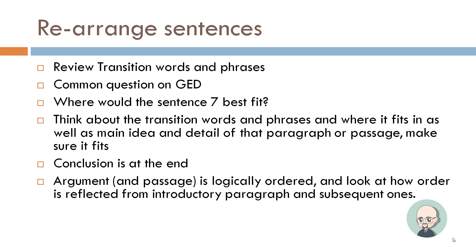An argument or passage is logically ordered. Look at how the order is reflected from the introductory paragraph on down through the subsequent ones. So if the introduction paragraph says there are three reasons why and lists three of them, and the detailed paragraphs have three of them but they're in a different order, then something might be amiss — something might be wrong.